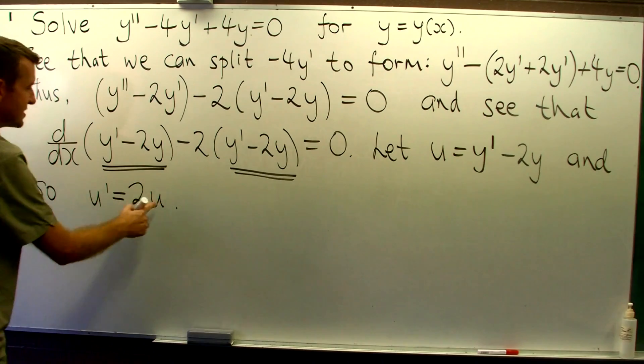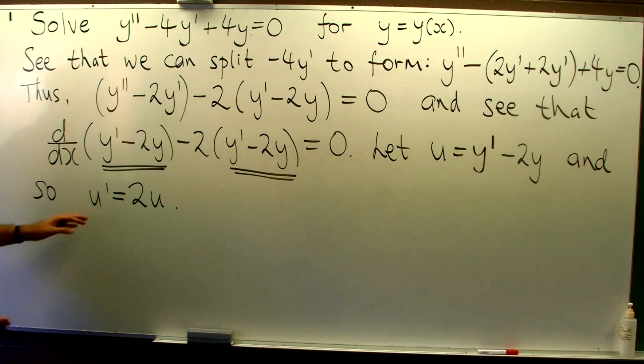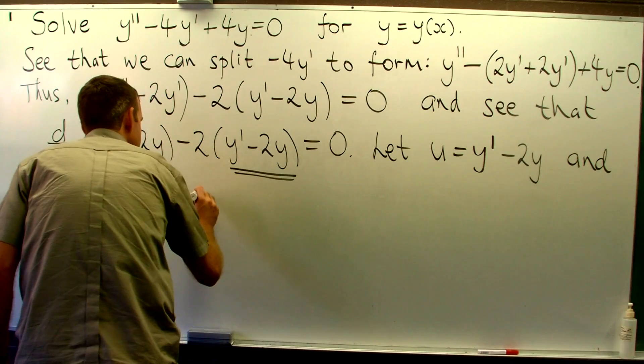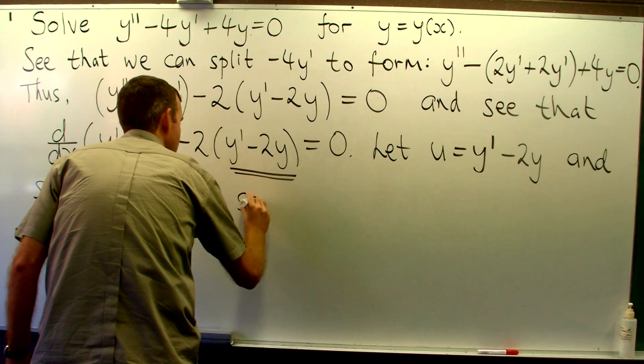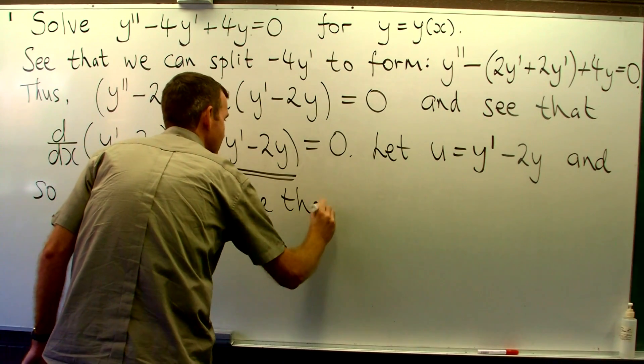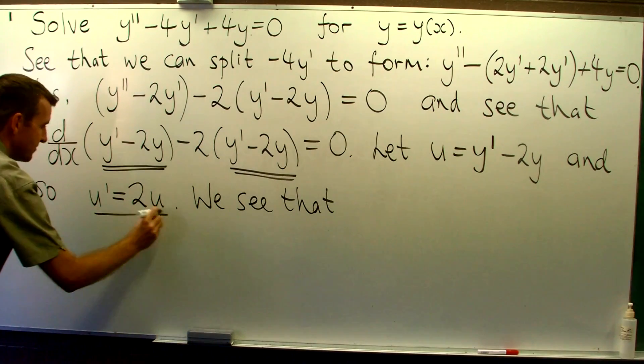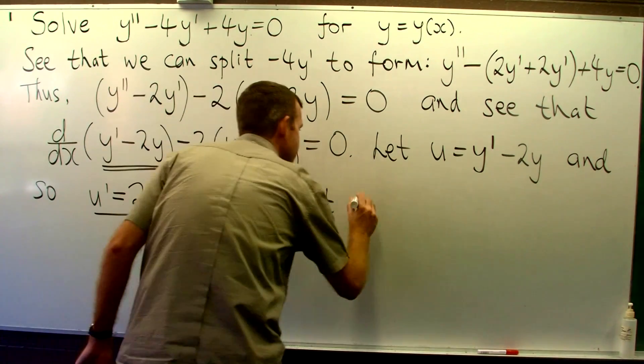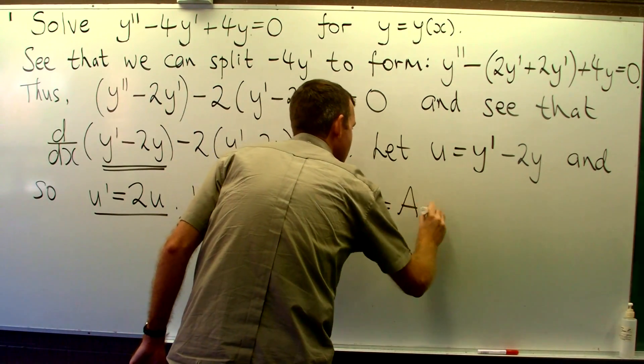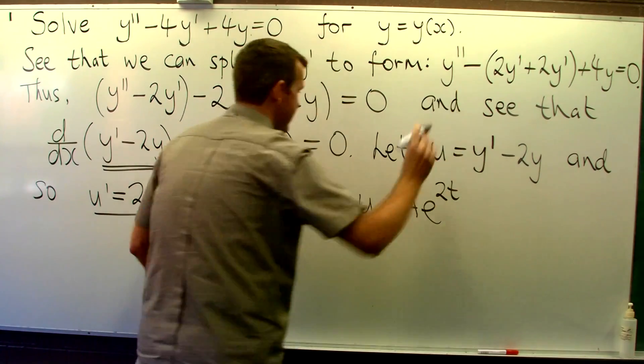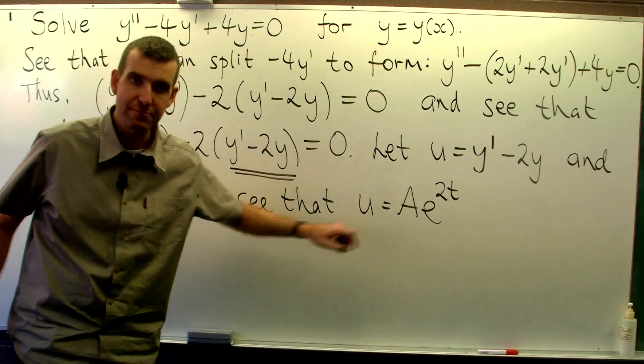Now, we can easily solve this. We can solve it directly. The solution is going to be an exponential function. So if we solve this ODE, we obtain this, where a is an arbitrary constant.